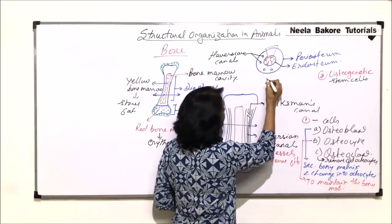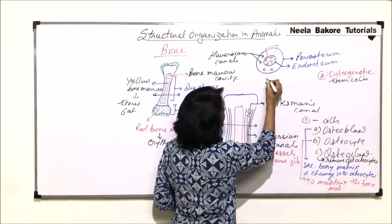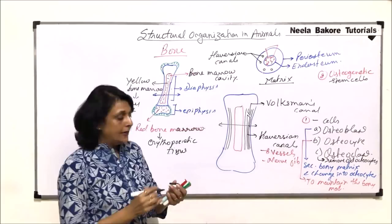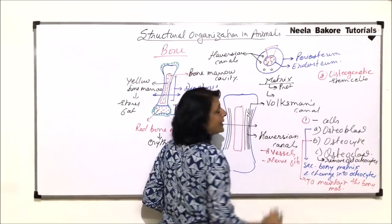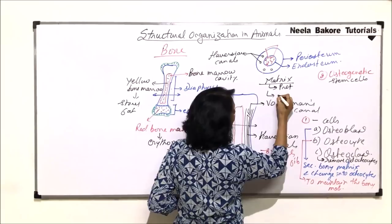Arrangement, we will see a little later. What is the matrix made up of? The matrix is hard, and it is made up of two things. One is the protein part, and there are salts which get deposited.